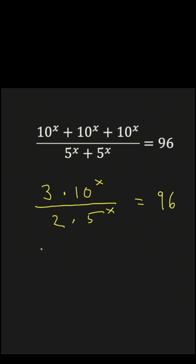Next, we can write this as 3 halves times 10 to the x over 5 to the x.